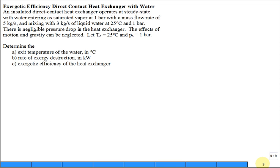We have an insulated direct contact heat exchanger operating at steady state with water entering as saturated vapor. Let me draw it up here. We'll have inlet one, and this is water as saturated vapor. It comes in at one bar, and we could look up the temperature T1 which is P1. It's P_sat at one bar, which is just under 100 degrees C.